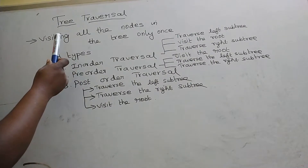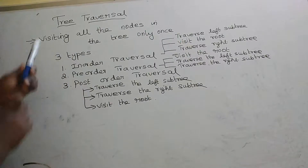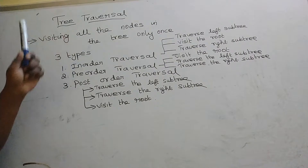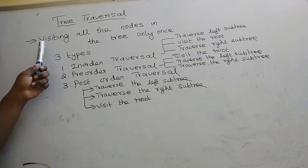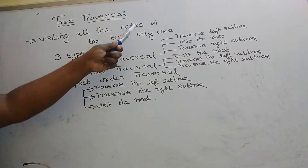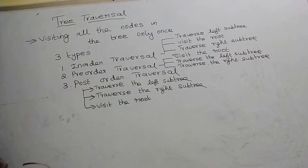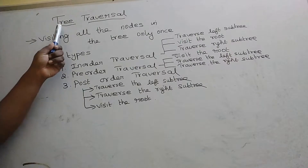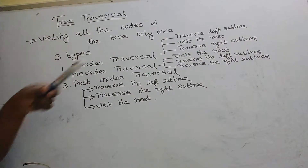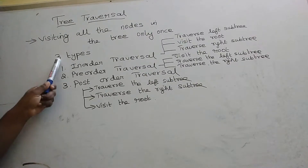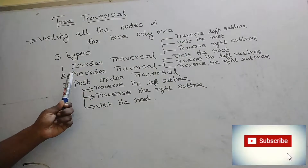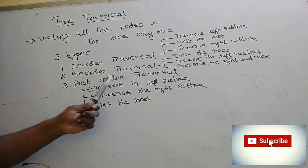In this tutorial, we are going to learn about tree traversal. First, we are going to see what tree traversal is. Visiting all the nodes in the tree only once is called tree traversal. We are going to visit all the nodes in the tree. There are three types of traversal: inorder traversal, preorder traversal, and postorder traversal.